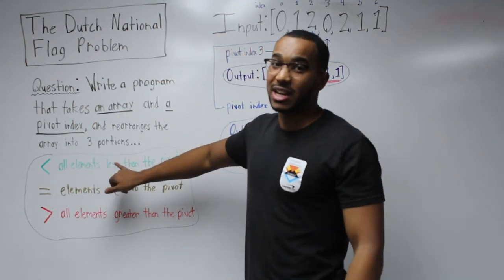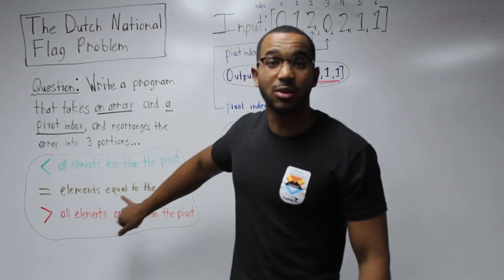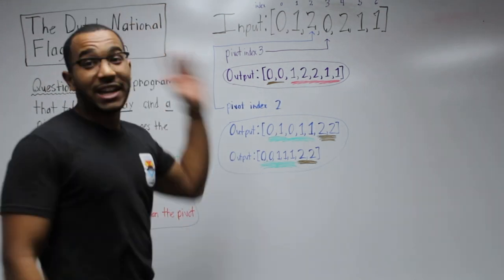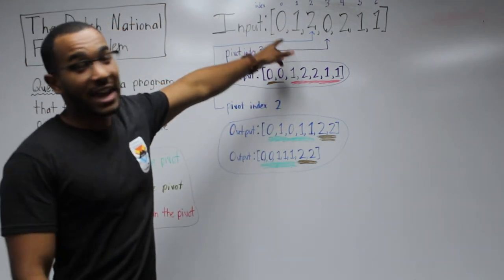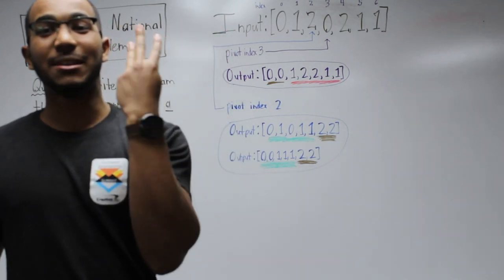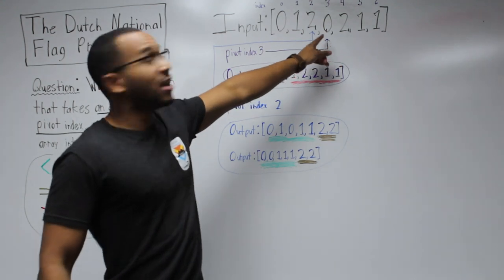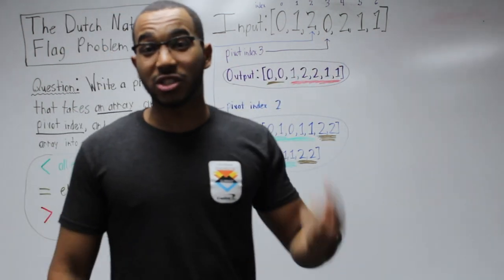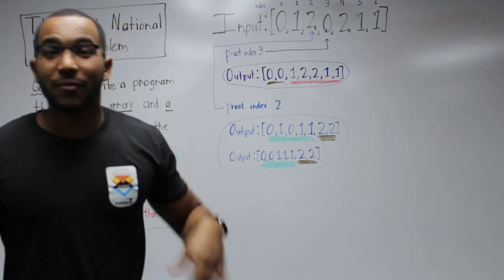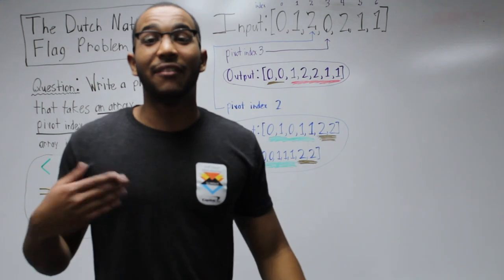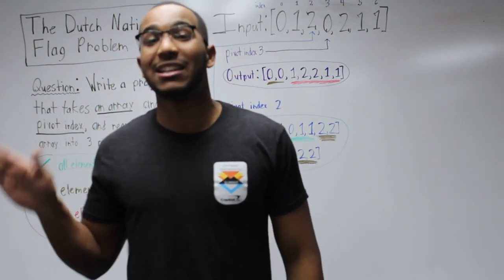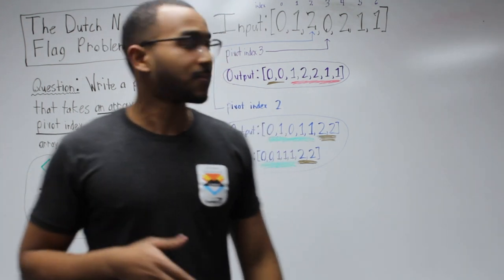I've color-coded it: green is items less than, brown is items equal to, and red is items greater than the value at the pivot index. Here's an example array. If we choose three as the pivot index, the value at index three is zero. We need to repartition this array around the value zero, so every value less than zero is to the left, every value equal to zero is grouped together, and every value greater than zero is past all the zeros.